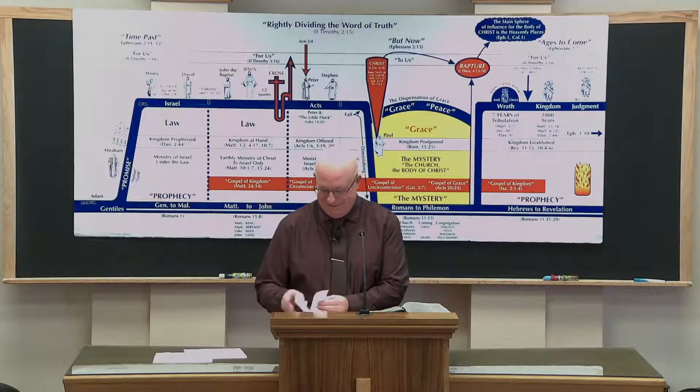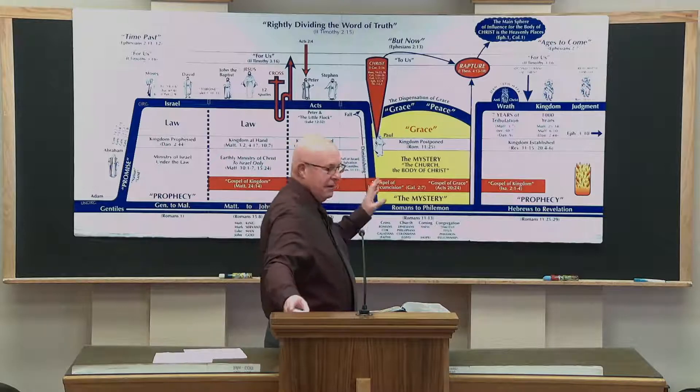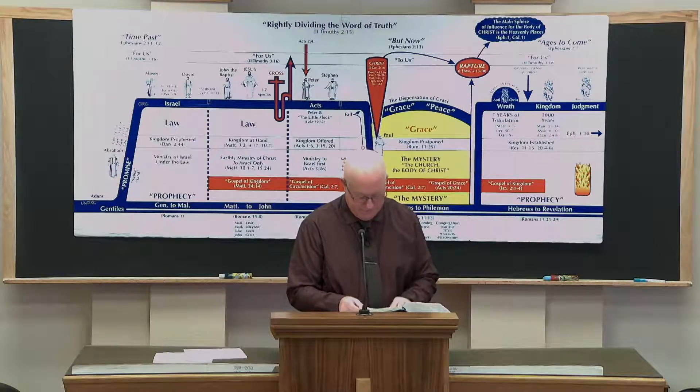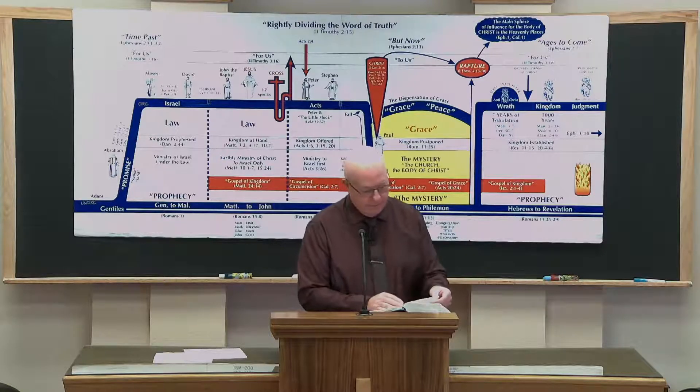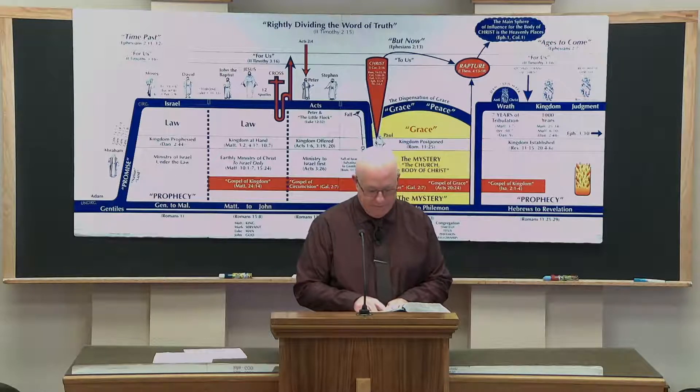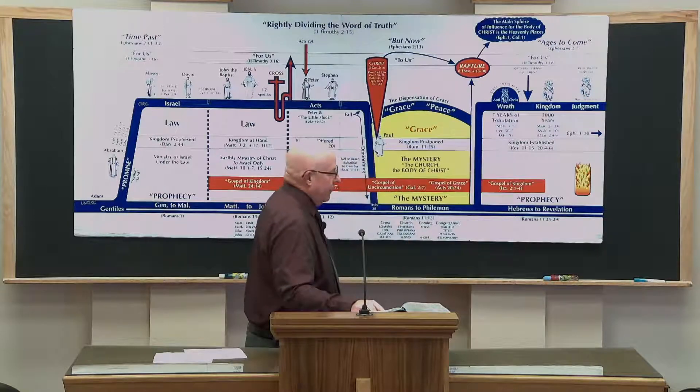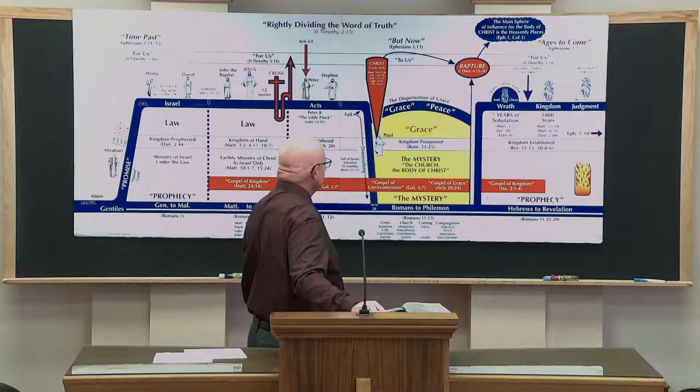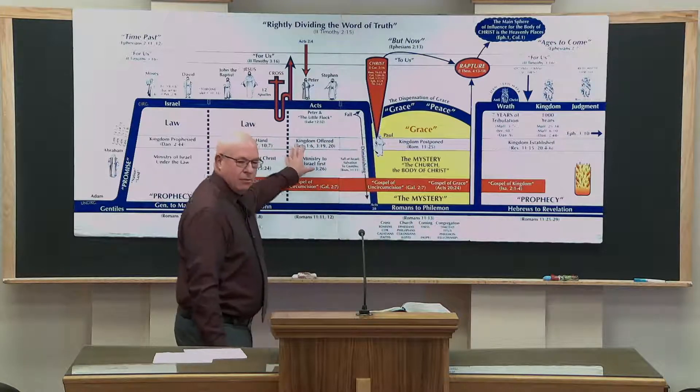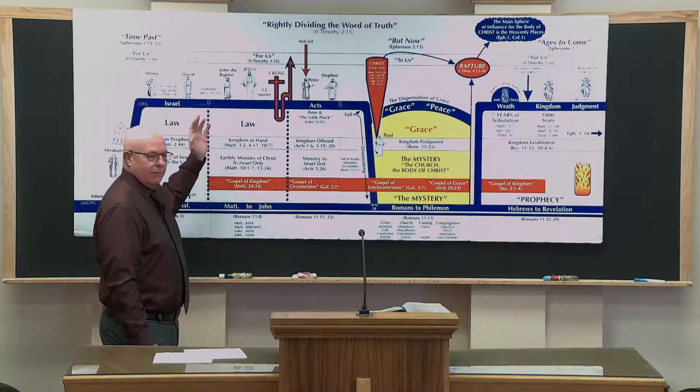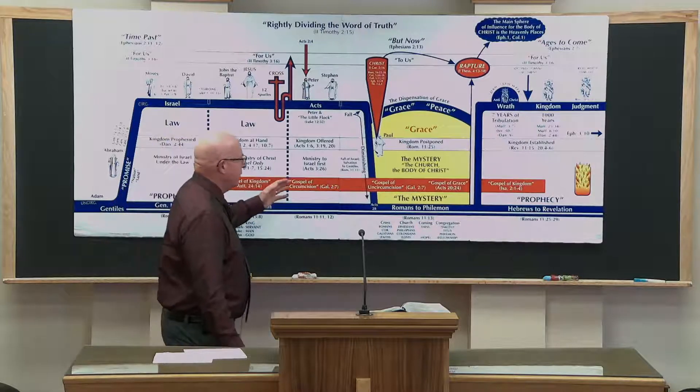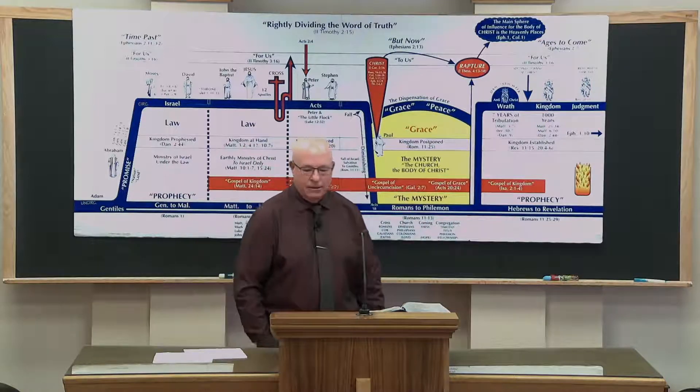But Paul brings in unlimited atonement, to all and upon all that believe, Romans 3:22. To even the righteousness of God, which is by faith of Jesus Christ, unto all and upon all them that believe, for there is no difference, for all have sinned. Over here was a limited atonement. He was only dealing with His people. That's different. That's a huge change.